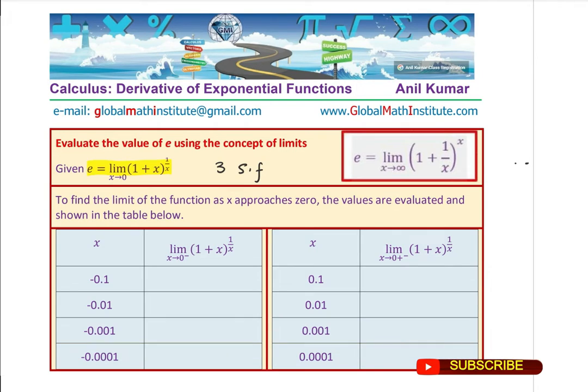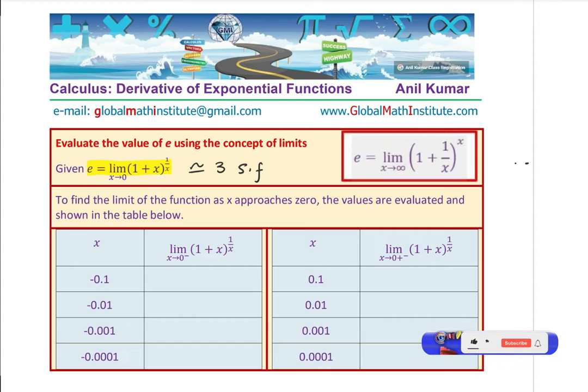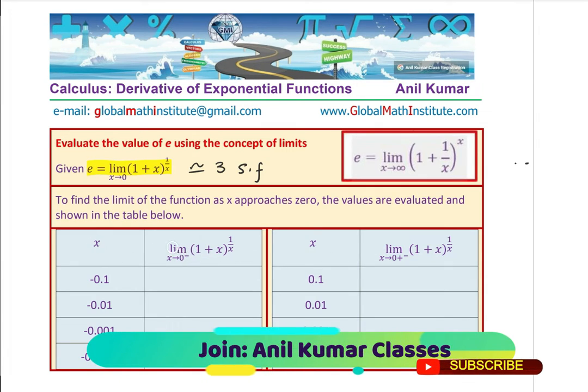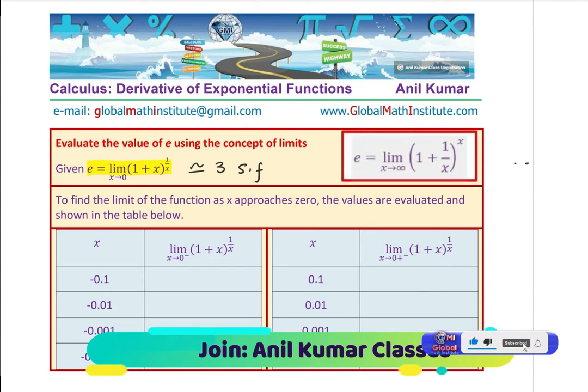So, accurate to three significant figures, we will go to thousandth. I have created a table here for you. x values approaching from left hand side, we say limit 1 plus x to the power of 1 over x, where x approaches 0 from left hand side. We will take values as minus 0.1, minus 0.01, minus 0.001, minus 0.0001, and we will figure out what is this value.